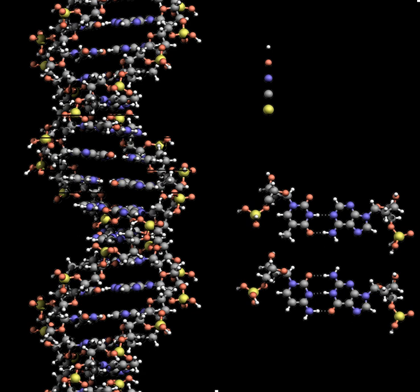DNA is a long polymer made from repeating units called nucleotides. The structure of DNA is dynamic along its length, being capable of coiling into tight loops and other shapes. In all species it is composed of two helical chains bound to each other by hydrogen bonds.